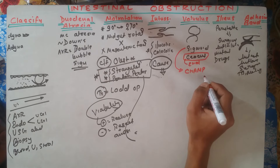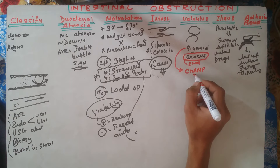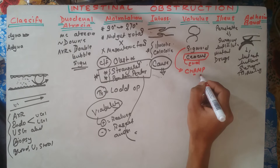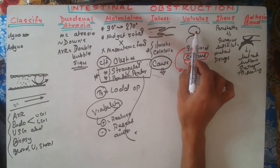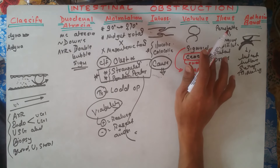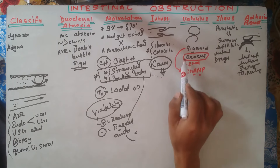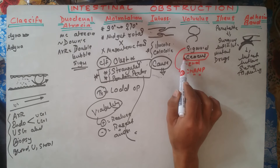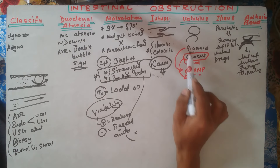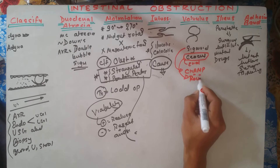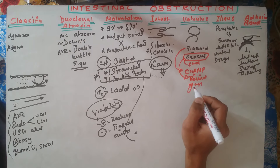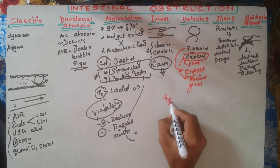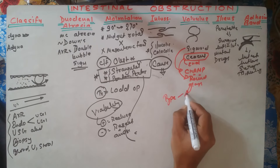CHAMP: H for hypothyroidism and anticholinergic drugs, A for mentally retarded individuals or multiple sclerosis, M for multiple sclerosis, and P for Parkinson's disease. Volvulus is associated with these different diseases. Cecal volvulus shows a round glass shadow on X-ray. Volvulus can be either acute or recurrent type.